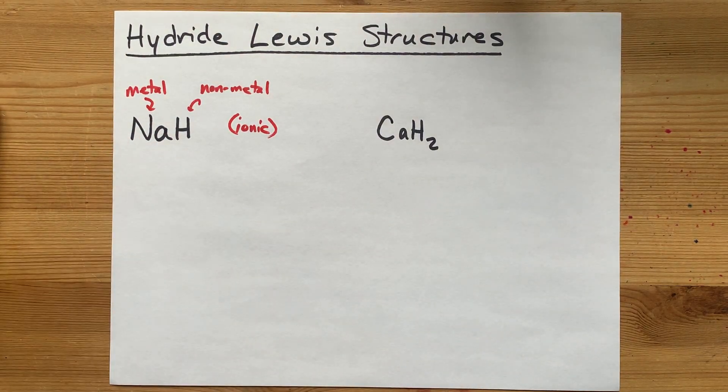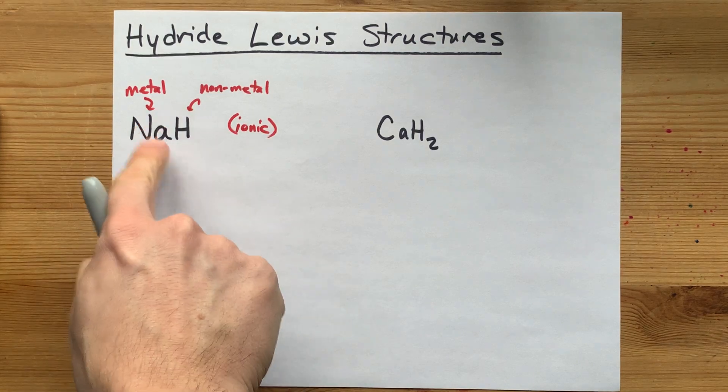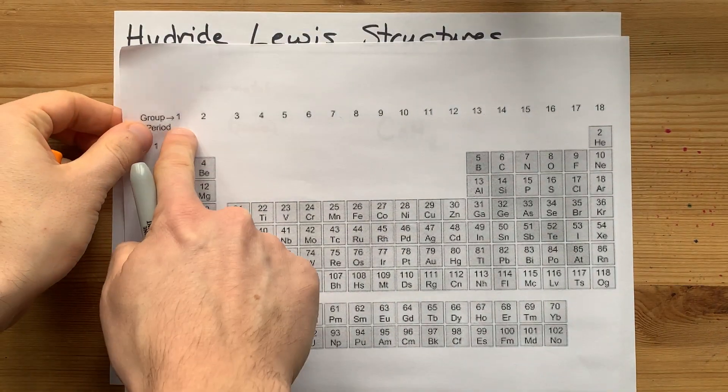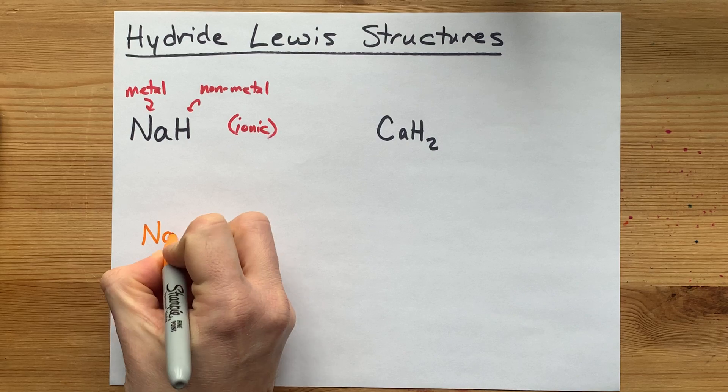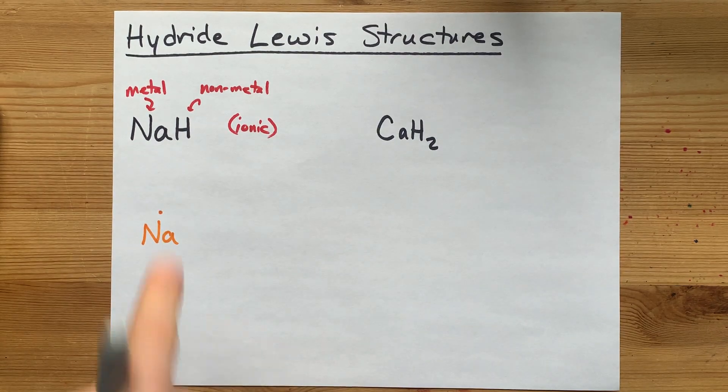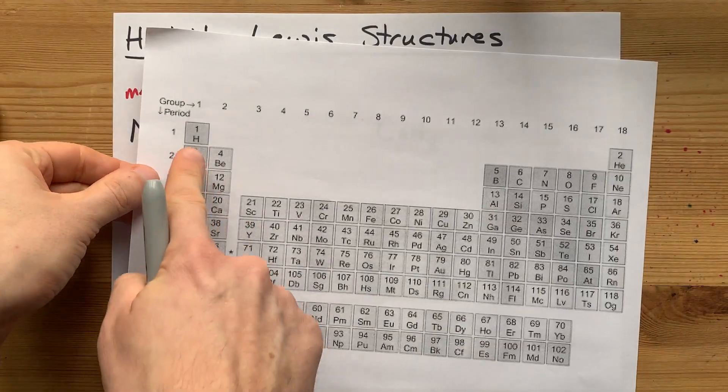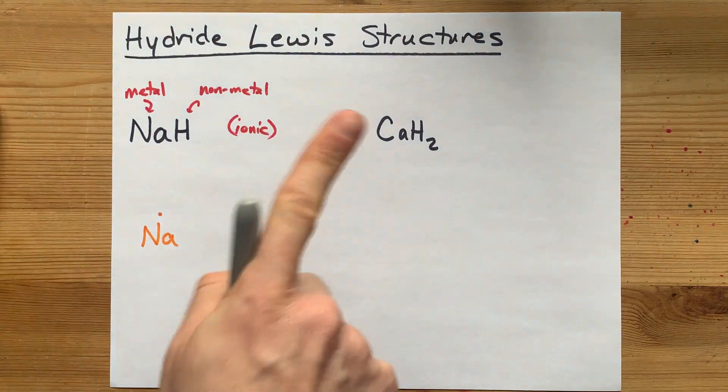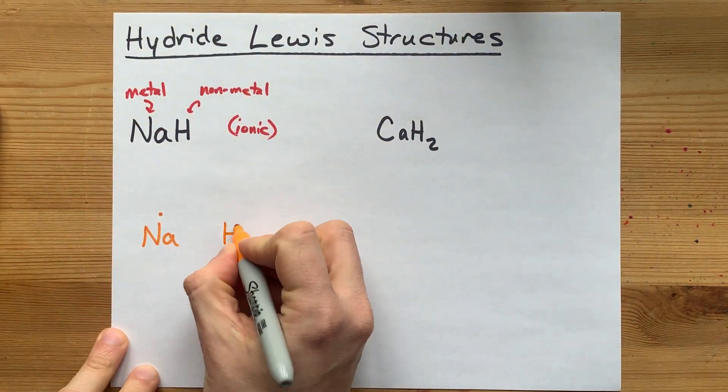And so, what happens here is that sodium, in group 1, brings one valence electron with itself. Hydrogen, also in group 1, also brings one electron with itself.